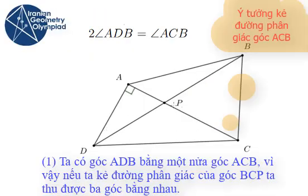this angle is half of angle PCB. So if I draw the angle bisector of BCP, these three angles are equal.